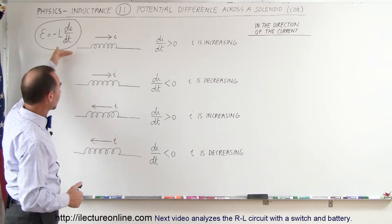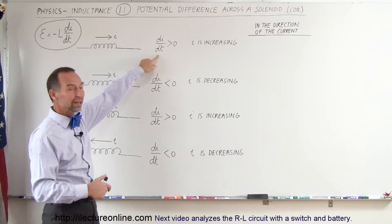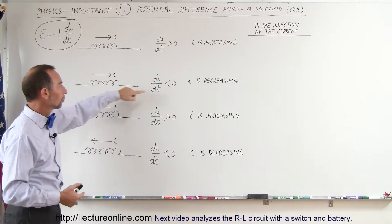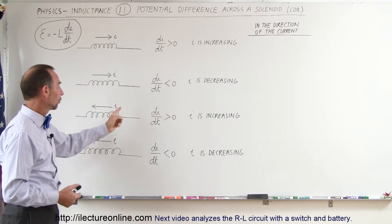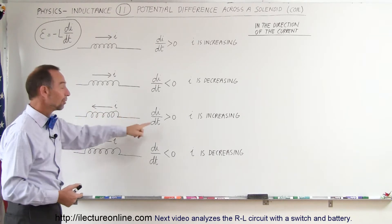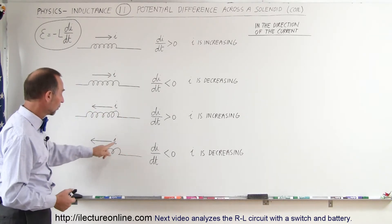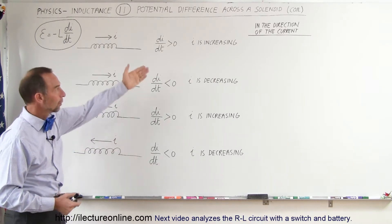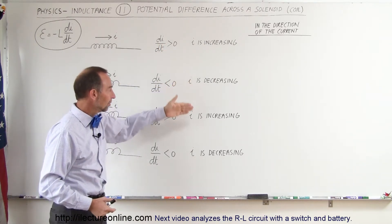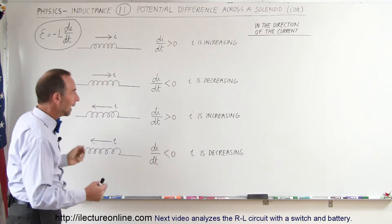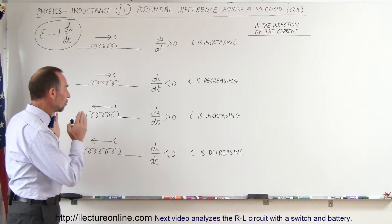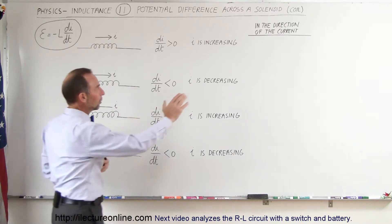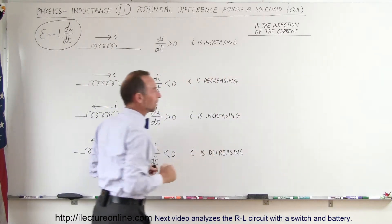In the top case, the current is going from left to right and the current is increasing. In the second case with the current going from left to right, the current is decreasing. Here the current is going from right to left and the current is increasing, and there the current is going from right to left and the current is decreasing. So: I increasing, I decreasing, I increasing, and I decreasing. We're going to follow the direction of the current in each case.